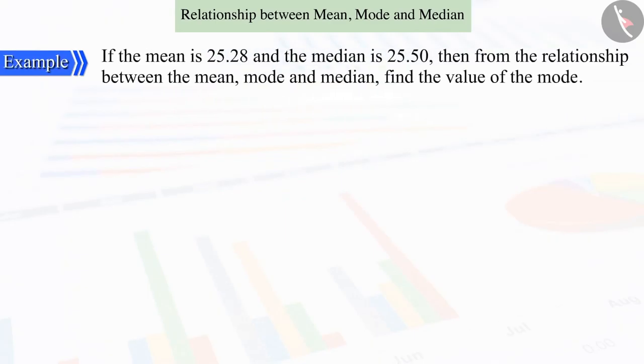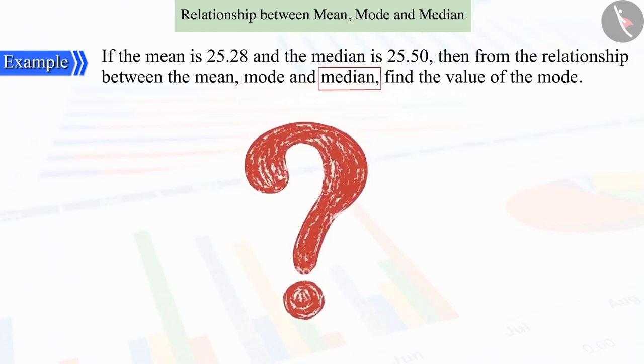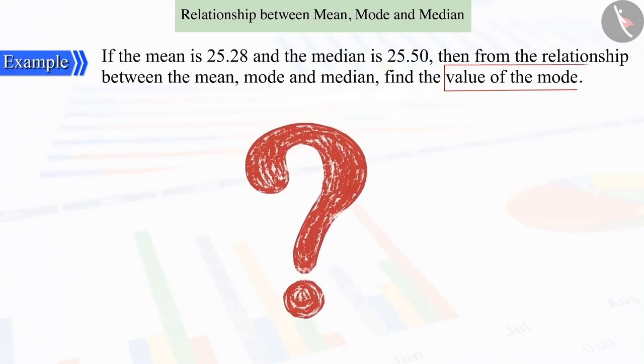In the previous video, we saw that the value of the mean is 25.28 and the value of the median is 25.50. So, from the relationship between the mean, the mode, and the median, can you find the value of the mode?